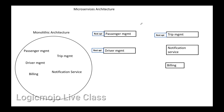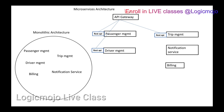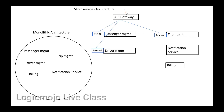The API gateway provides many benefits. All requests coming to a microservice architecture come through the API gateway, so a user doesn't need to call individual services like driver management, trip management, or passenger management directly. They call through the API gateway, which handles all routing to the different APIs. This simplifies the complexity of microservice architecture — multiple clients can access all different services through a single entry point.